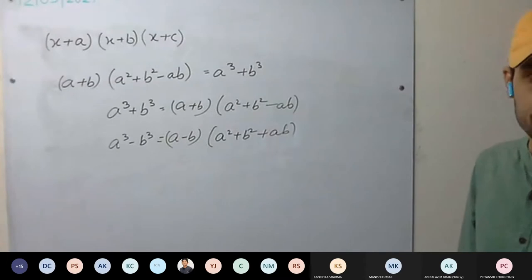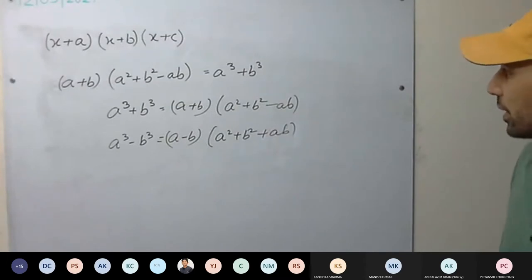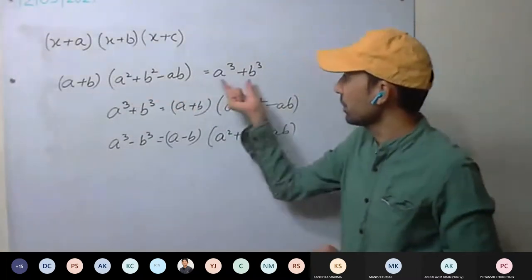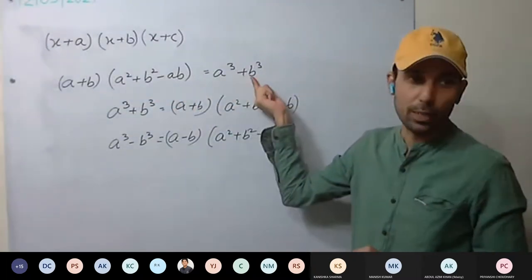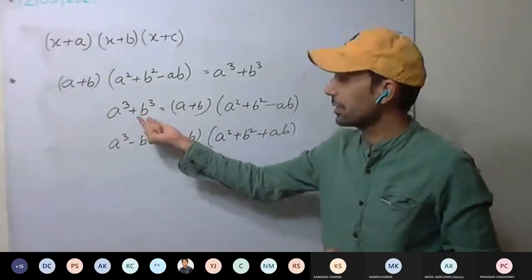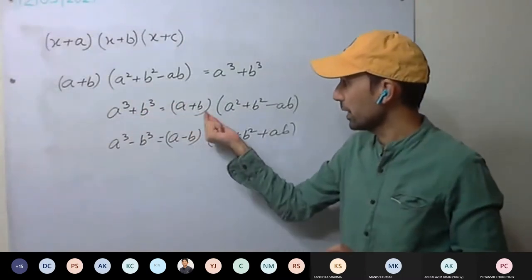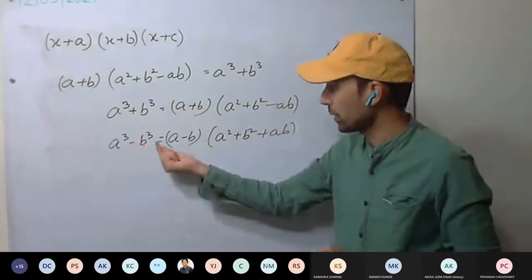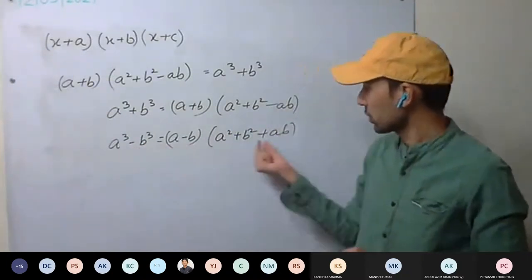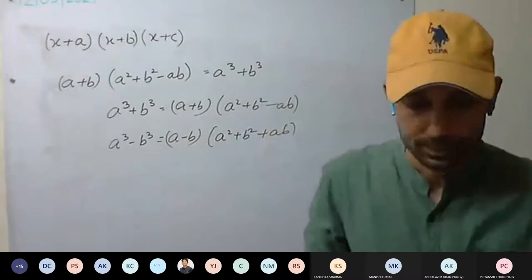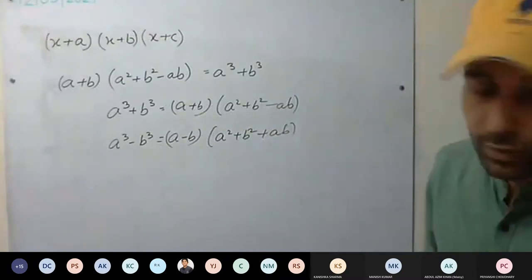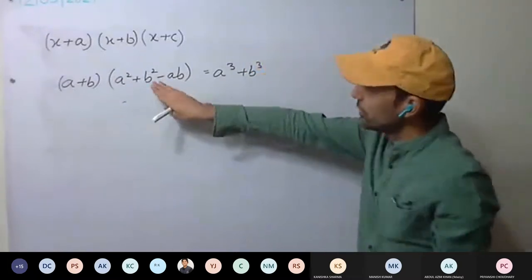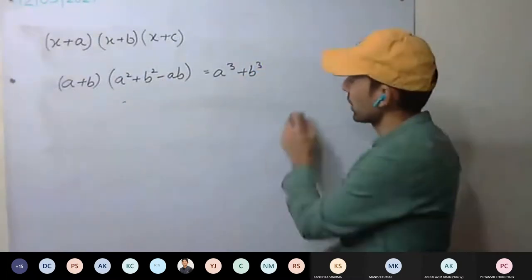This is clear. Multiply them, you are going to get A cube plus B cube. You can remember like this: A cube plus B cube equal to A plus B into A squared plus B squared minus AB. For A minus B: we are taking that so here plus. Last one — there is one more. If we remember this we can use this one to remember the next one.